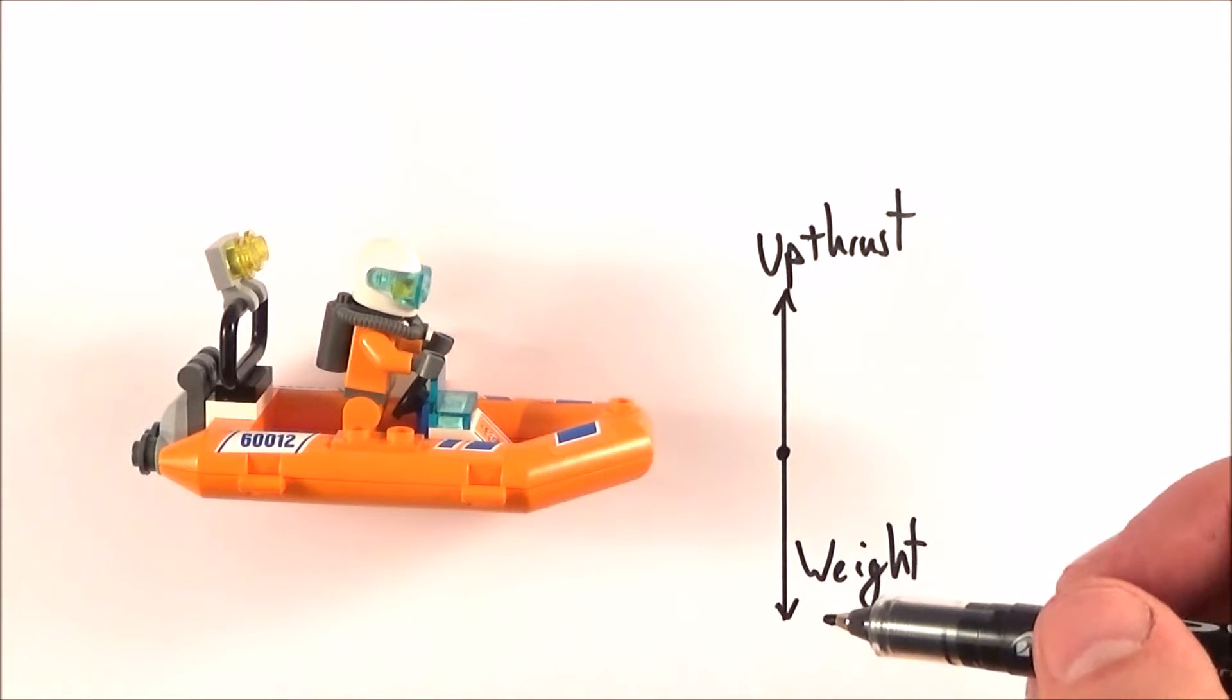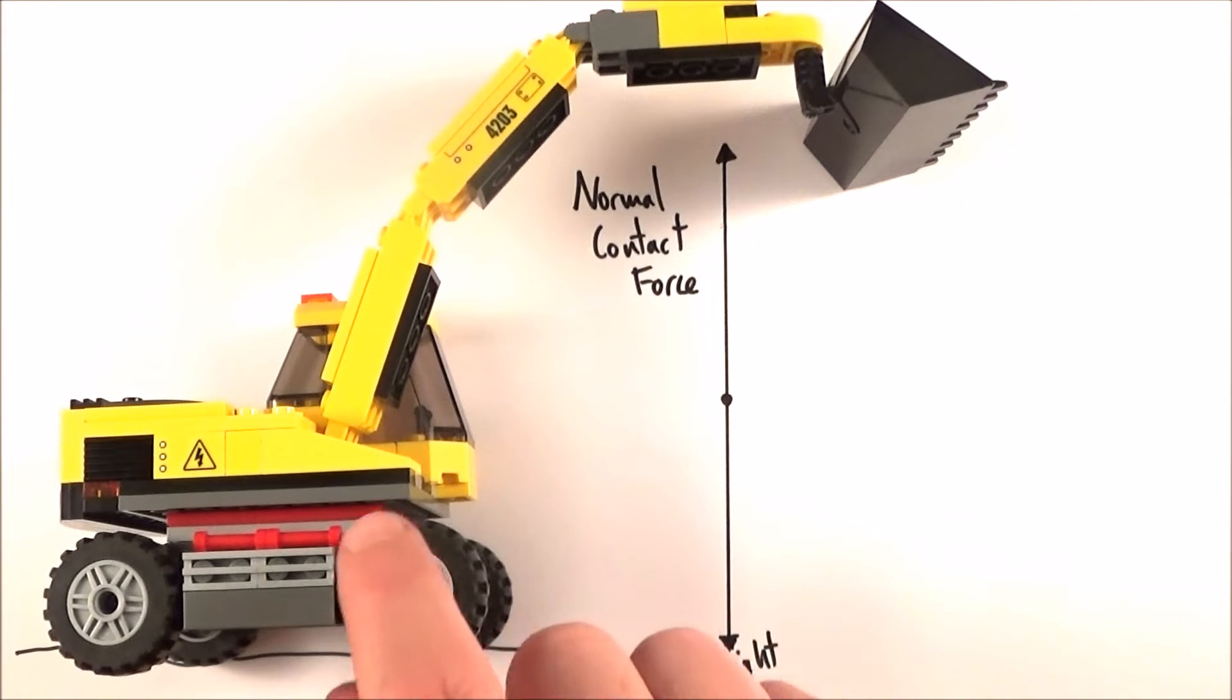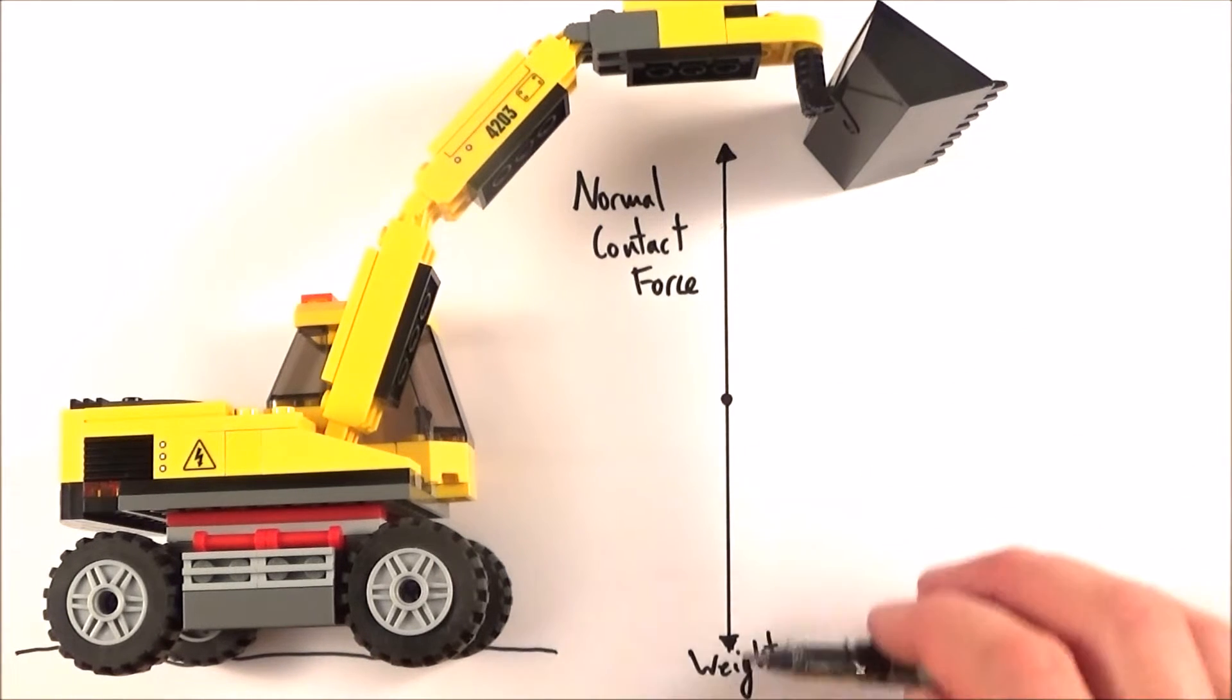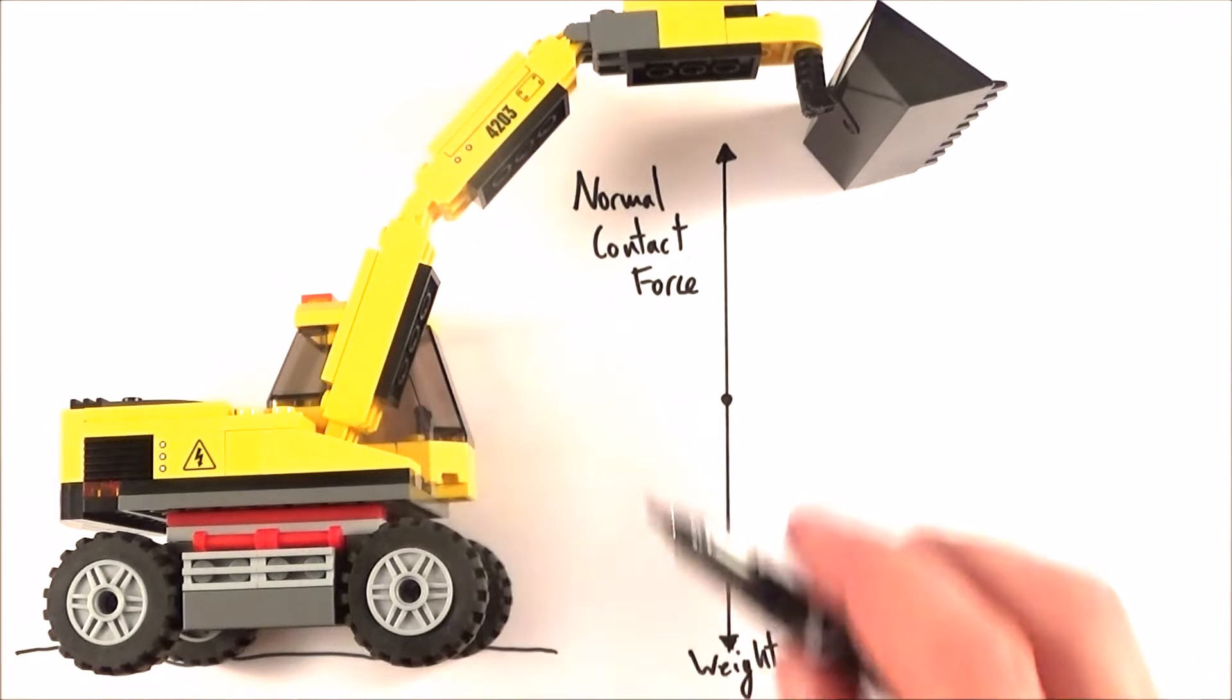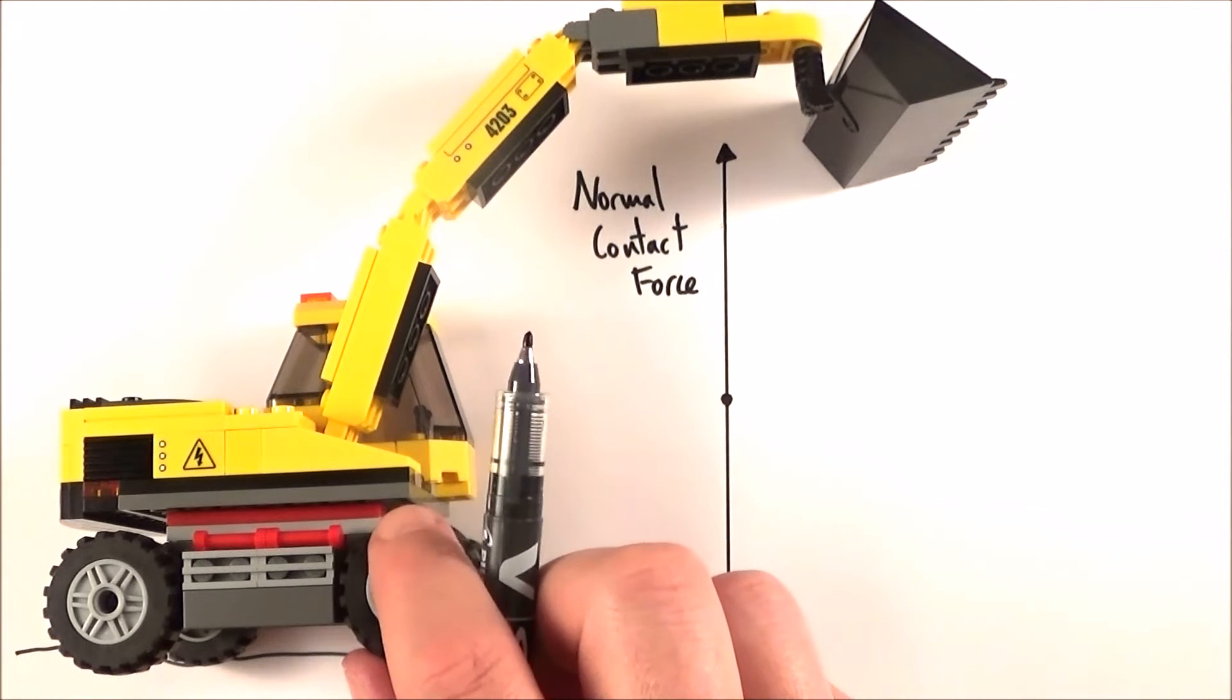Finally, we have maybe a free body diagram for something large like this digger here. Again, we've got a very large weight acting downwards, and this is counteracted by the normal contact force, which is effectively the force of the ground pushing back up on this rather large object.